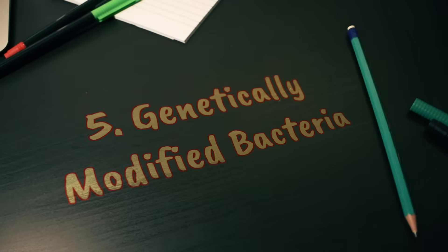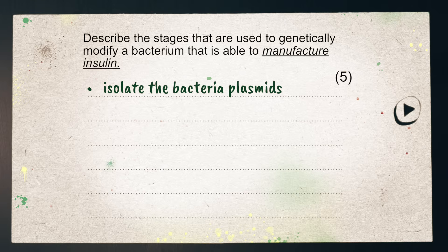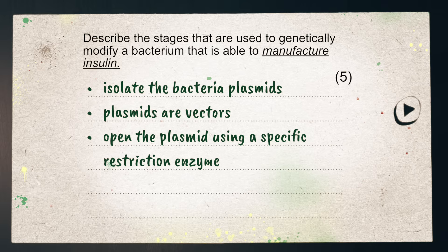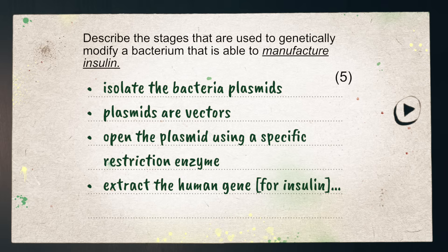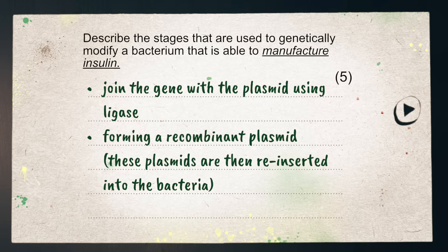The next one is genetically modified bacteria. An example question is 'describe the stages used to genetically modify a bacterium that is able to manufacture insulin'. They could ask about manufacturing anything, but the mark scheme should be really similar whatever the topic. Firstly, isolate the bacteria plasmids — there's a mark for acknowledging that these plasmids act as vectors. Open the plasmids using a specific restriction enzyme. From a human sample, extract the human gene for insulin using the same restriction enzyme. Take that gene and join it with the bacteria plasmid using ligase, forming a recombinant plasmid. The next step is inserting the plasmid into the bacteria — you could mention it to be safe.